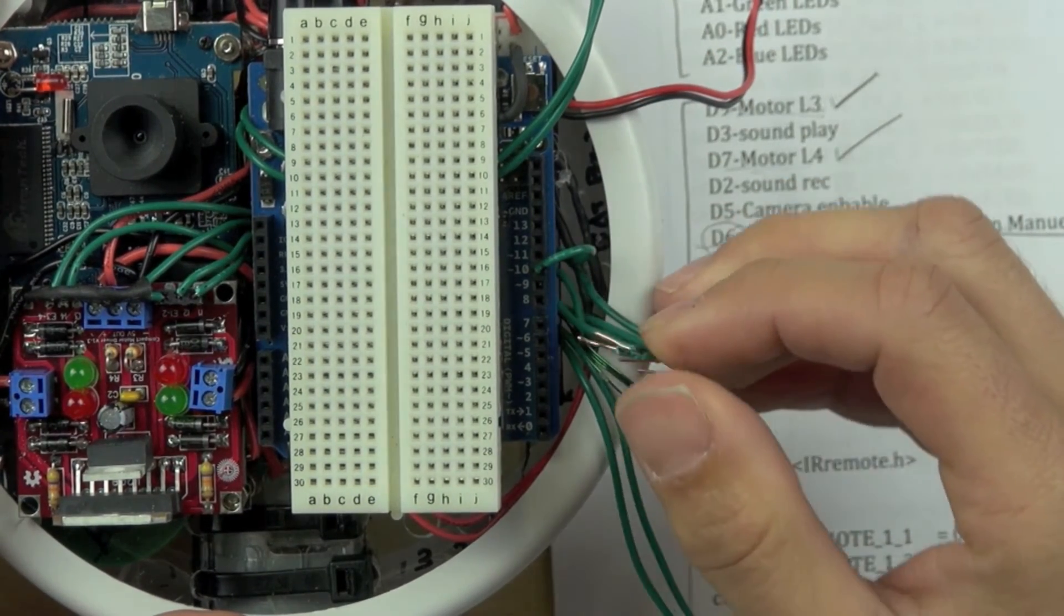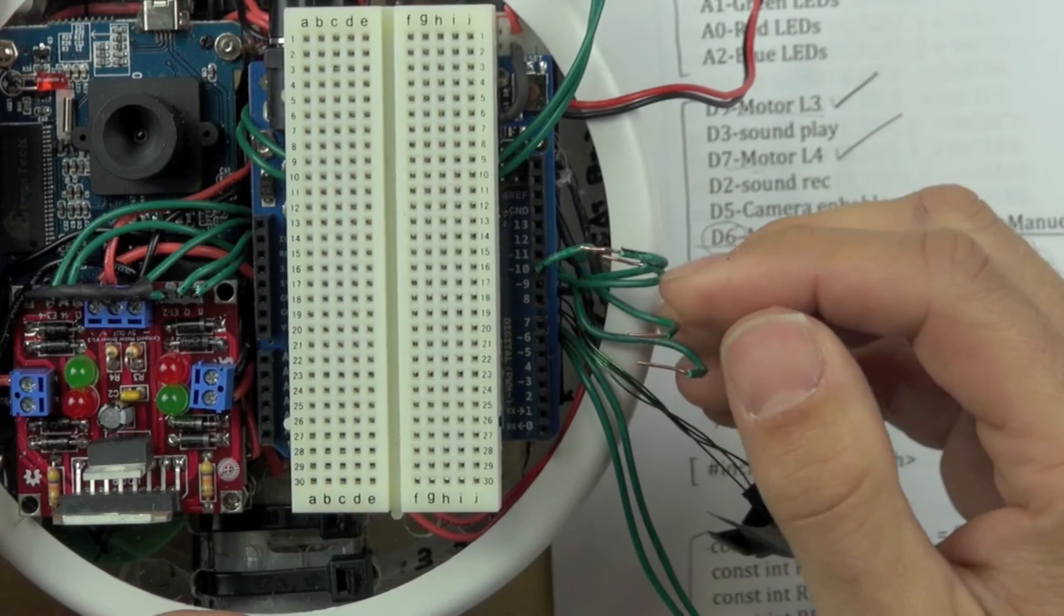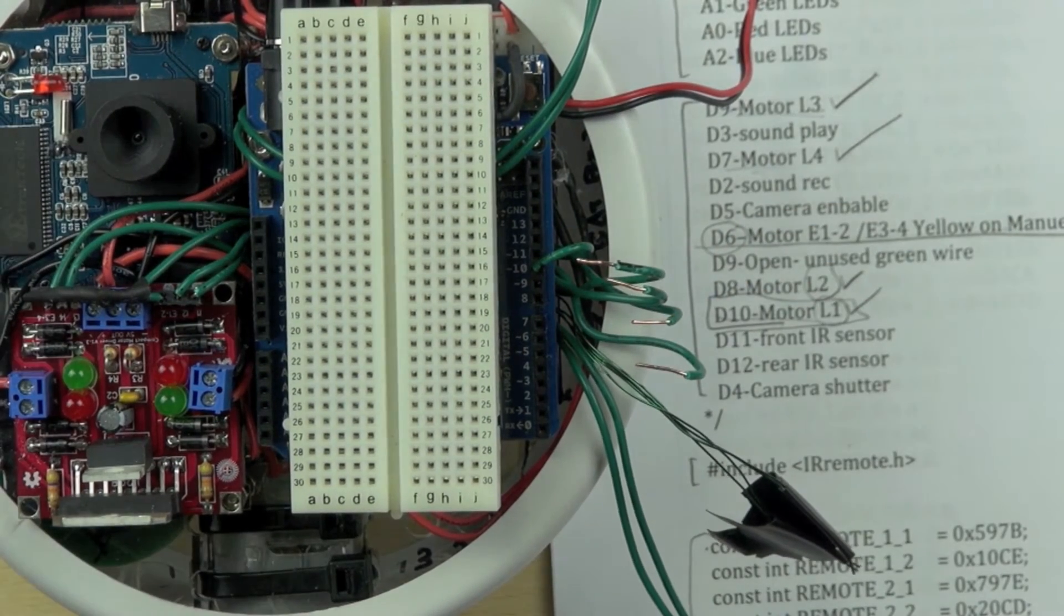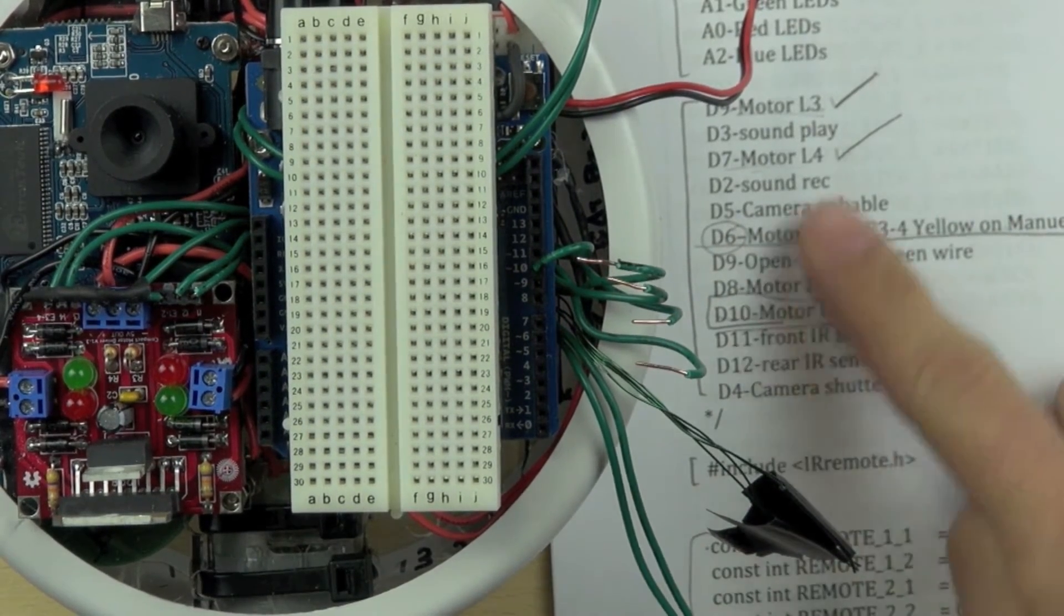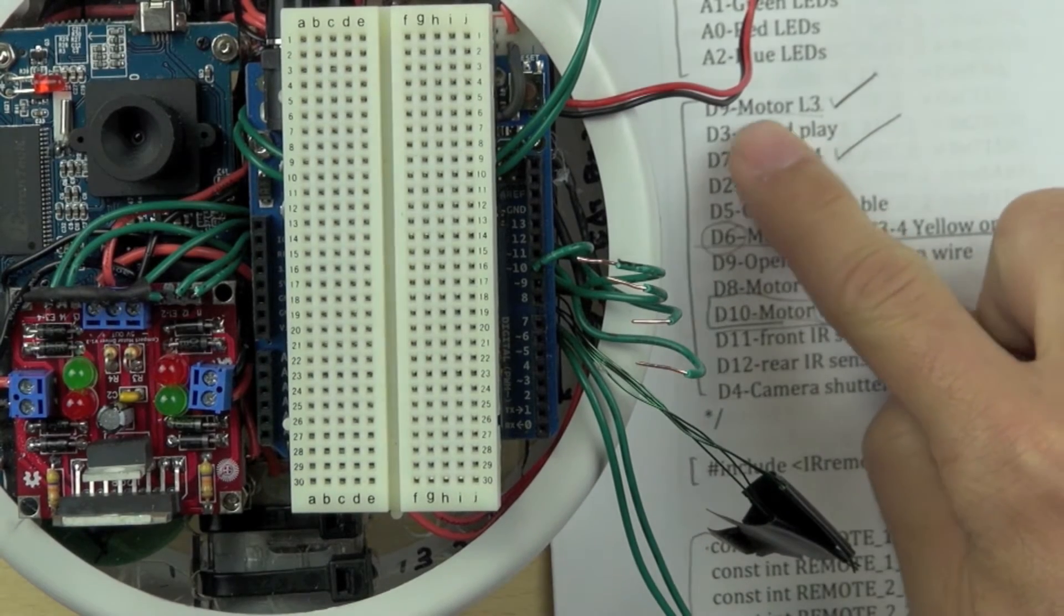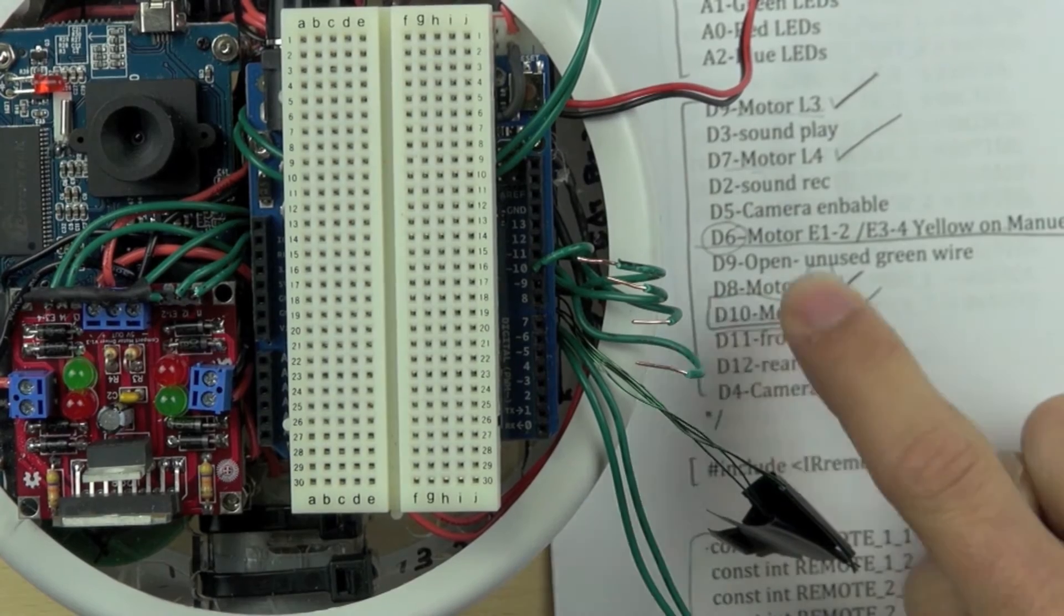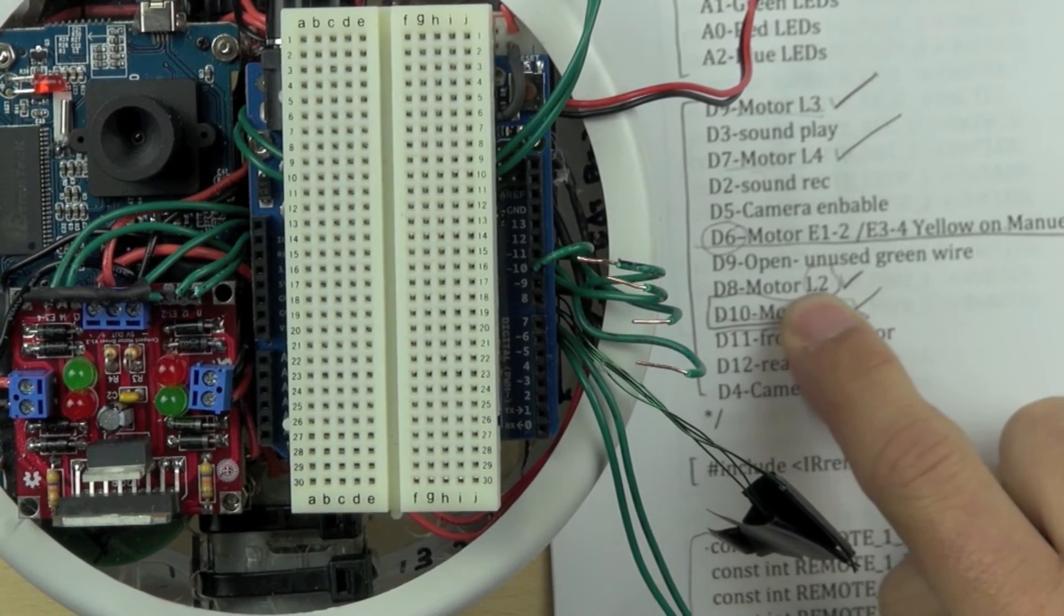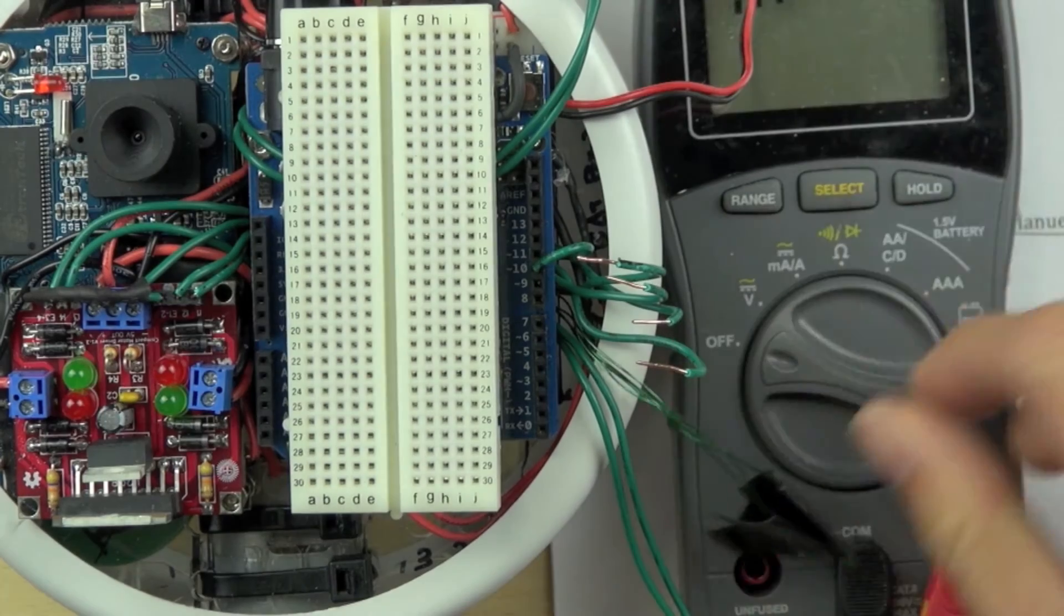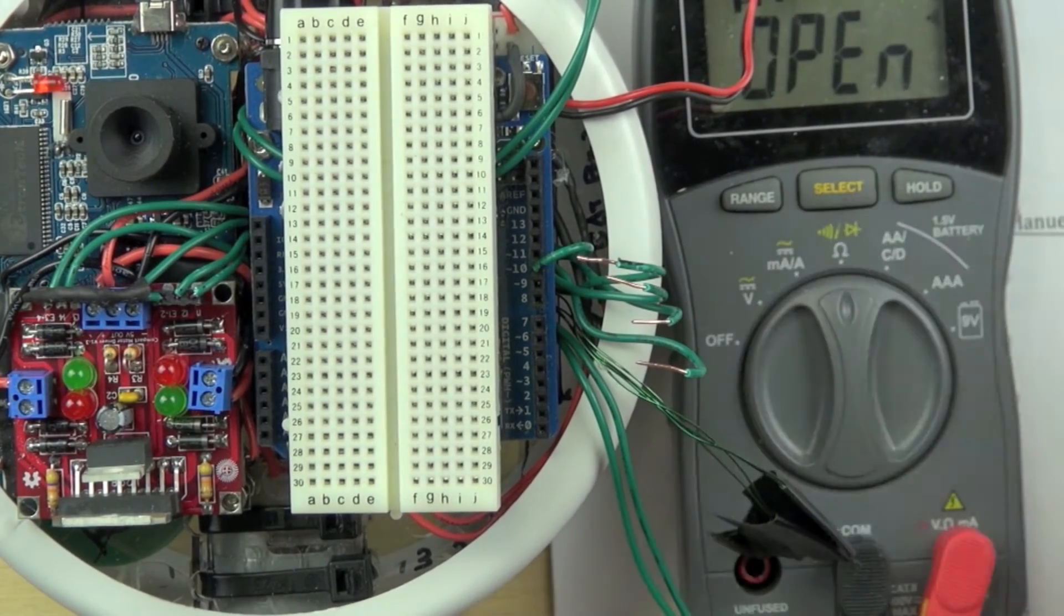OK, so we've got our first one done. Now we need to move on to the next one. We're going to use our multimeter again. We're going to connect L2 to digital pin 8, so we'll turn our multimeter to open again.